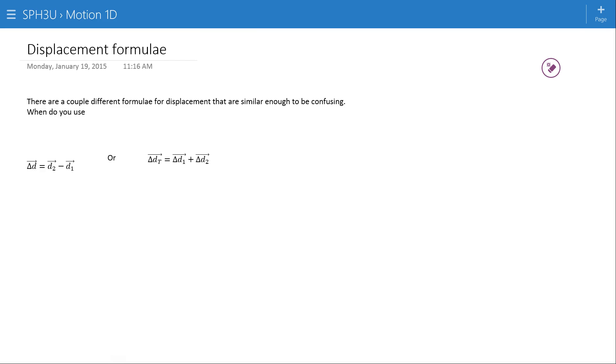Specifically, if we look at this formula, this formula here, we're getting the displacement as a result of some individual positions. These are positions. There's no delta, which means it's not a change in position, it's an actual location.